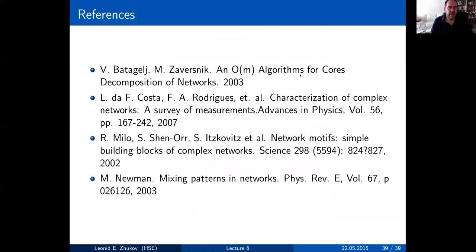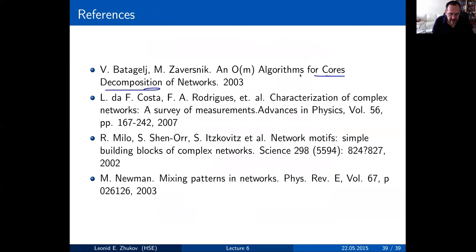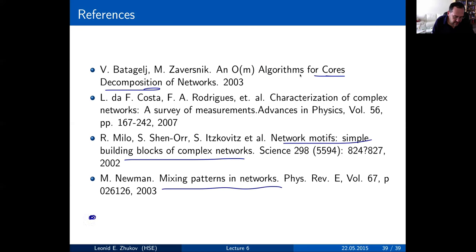That's pretty much it for today. A quick summary: we started by looking at k-cores and being able to pull out the centroid of graphs. We then looked at dyads and triads, then different network motifs. Finally, we talked about assortative and disassortative mixing. There's a reference for that, and I'll put a reference for various graph visualization algorithms there later.